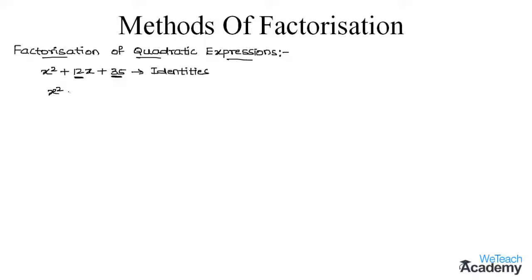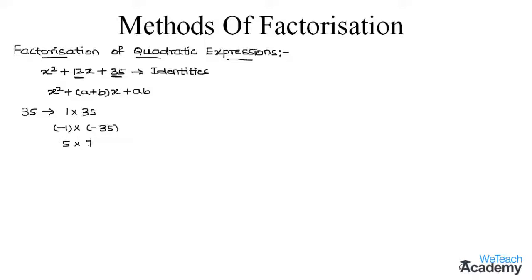We want to form the identity x² + (a + b)x + ab. In this example the constant term is 35. The possible factors of 35 are: 1 × 35, −1 × −35, 5 × 7, and −5 × −7.